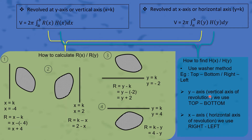If it's on the y-axis (vertical axis of revolution), we use top minus bottom. If it's on the x-axis (horizontal axis of revolution), we use right minus left.